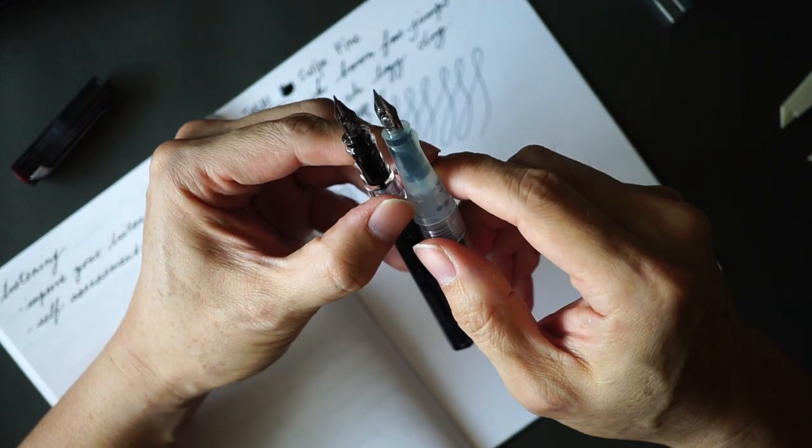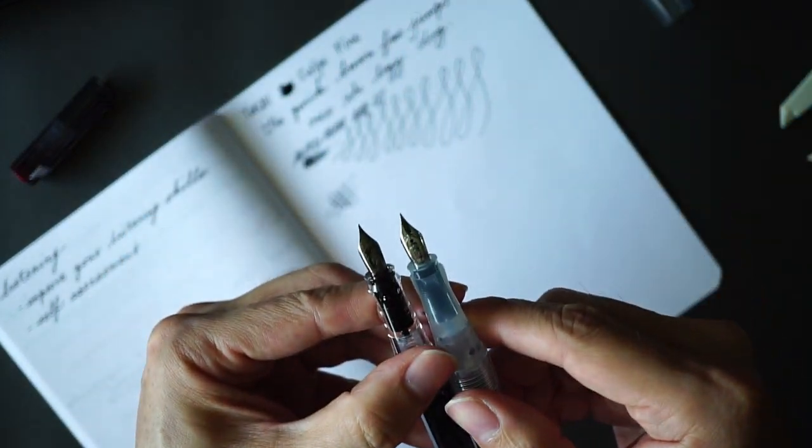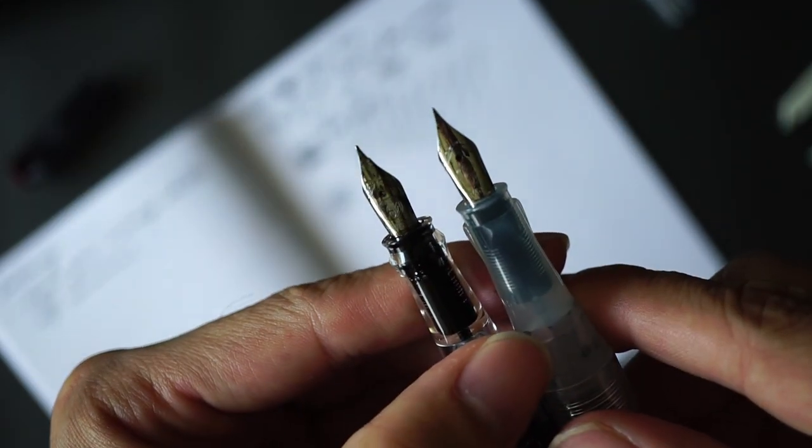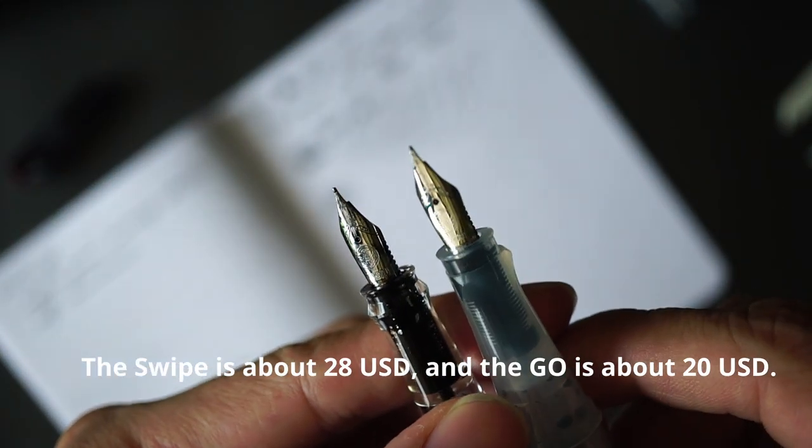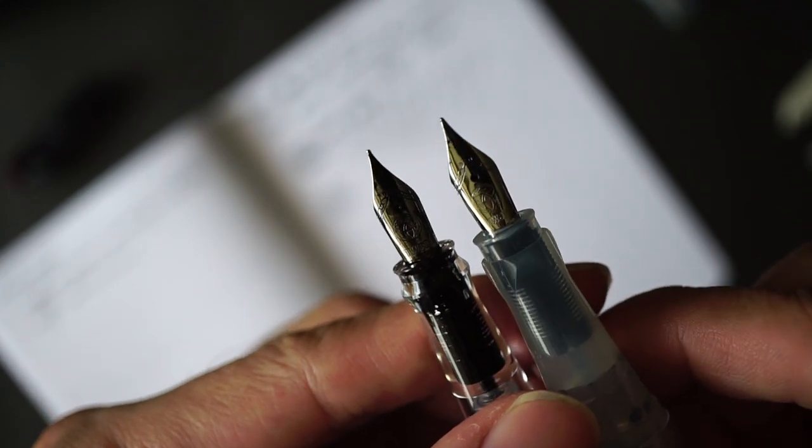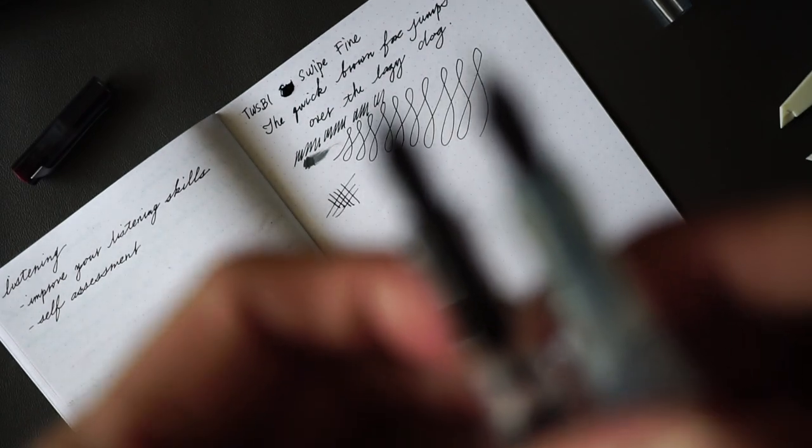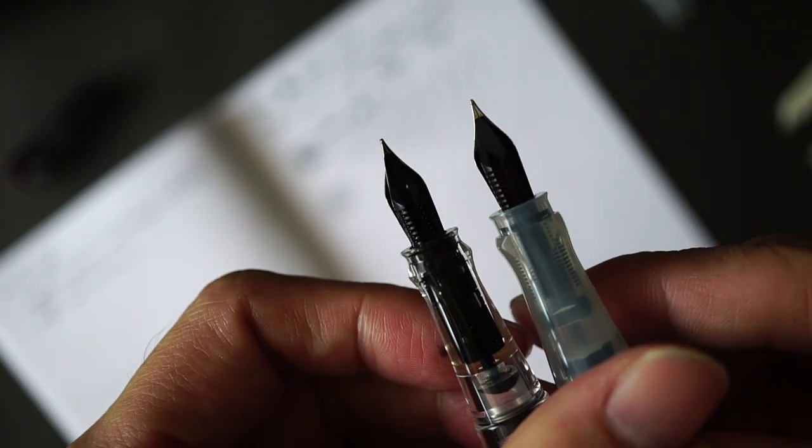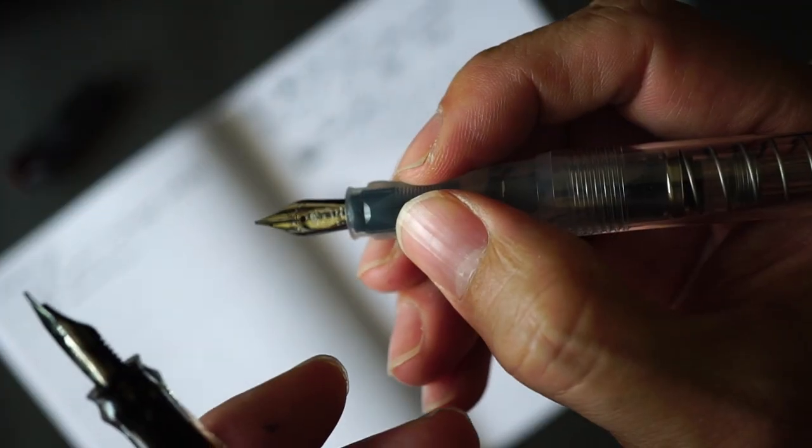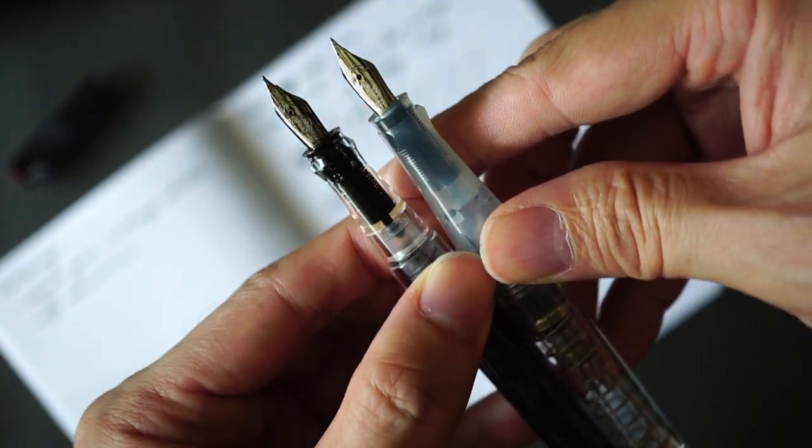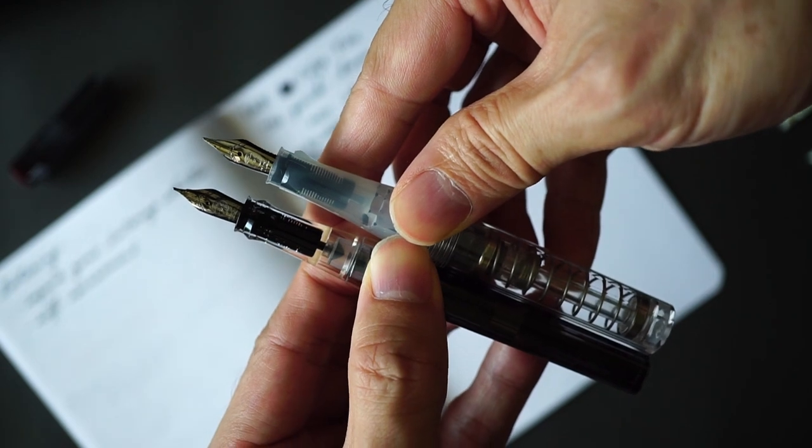Just want to show you what the pen looks like next to probably the closest priced cousin within the TWSBI line, and that's actually the TWSBI Go. The nibs look fairly similar, even down to the feed design. It looks fairly similar with that big channel down there in the middle. I would even say that section-wise, it's fairly similar to the TWSBI Go. I'm just curious about the dimensions as well. It's slightly, just very ever so slightly longer than the TWSBI Go.